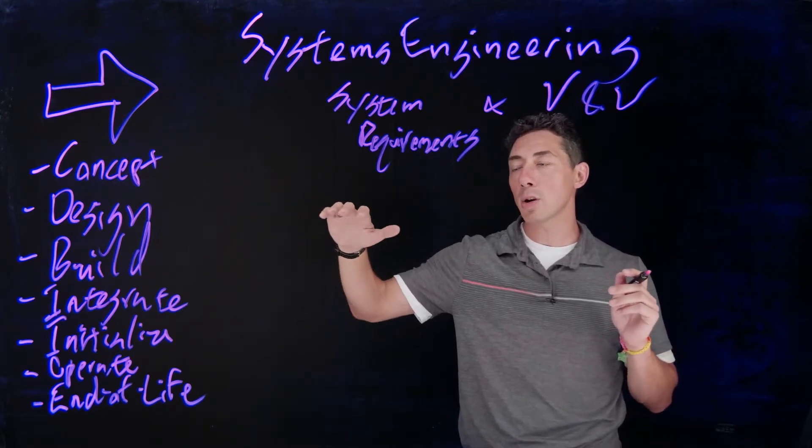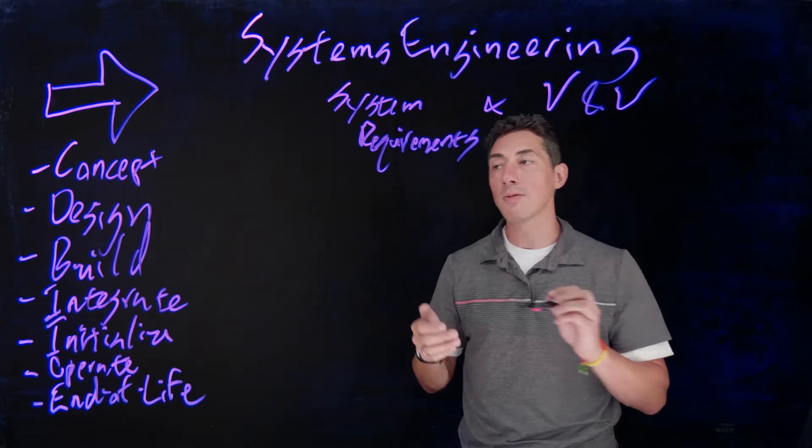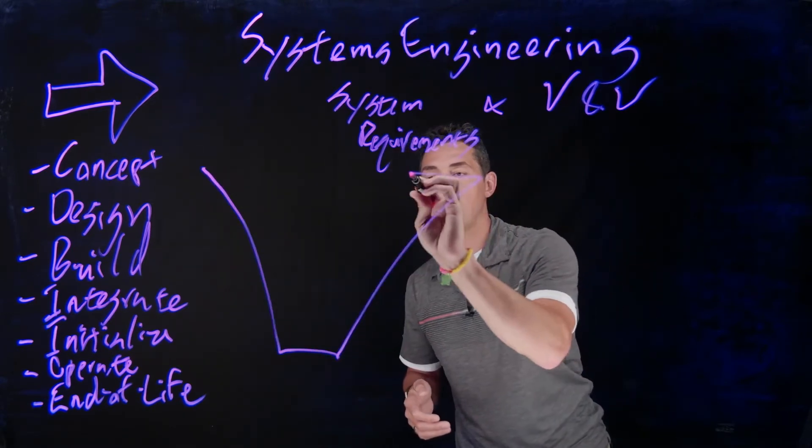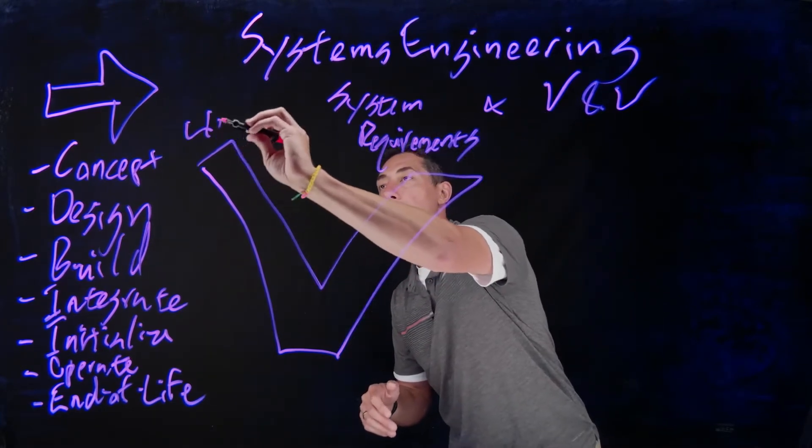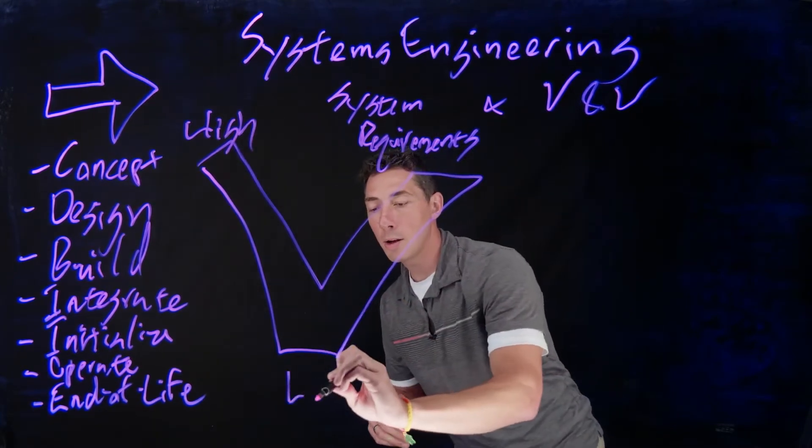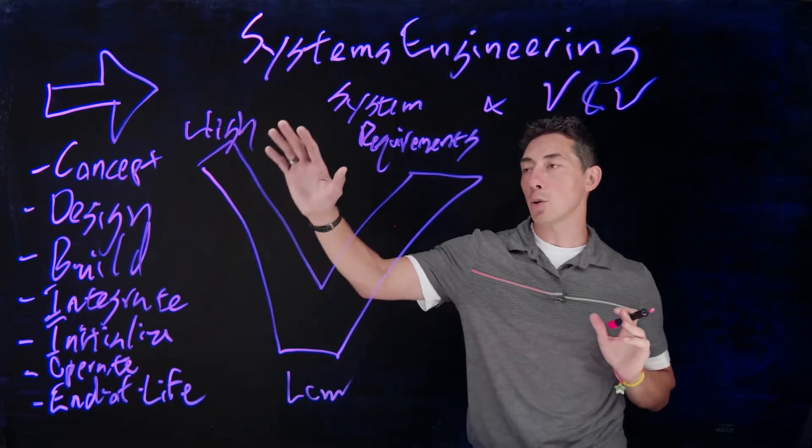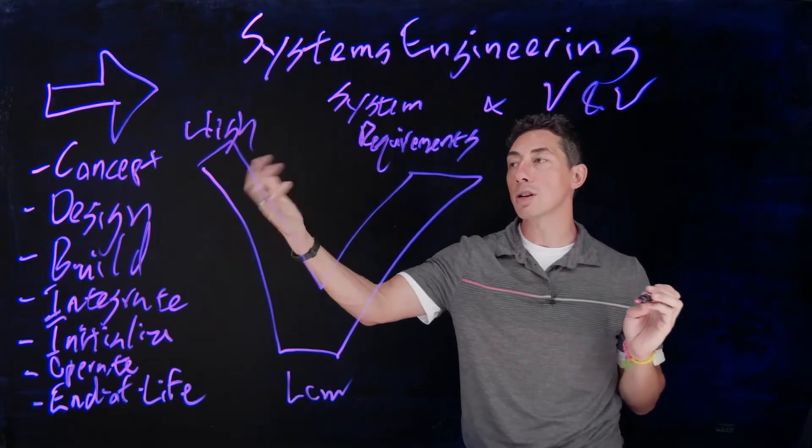And the way you're going to do that is through what's called the system V. So the idea with the system V, you've got high and low levels of detail. And your high level details, that's going to be your initial concept.